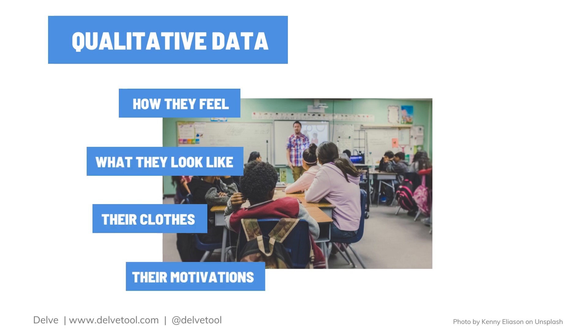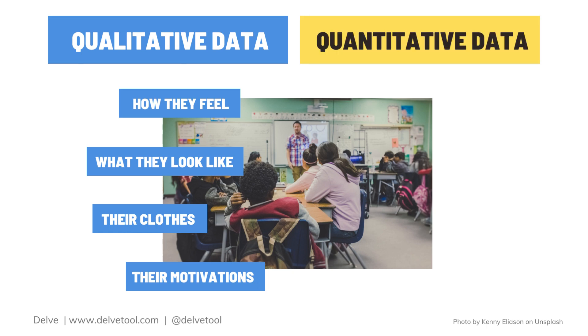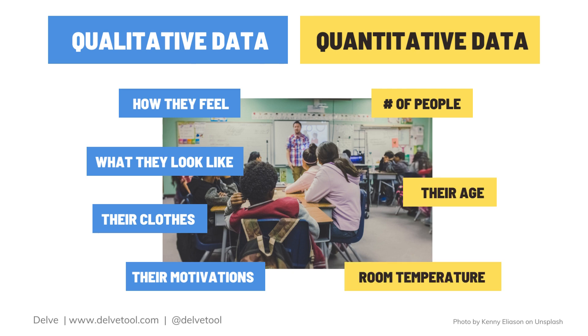Qualitative data could also capture the motivations of why they're here, whereas quantitative data about the same group may include the number of people in the group, their age, or the temperature in the room.